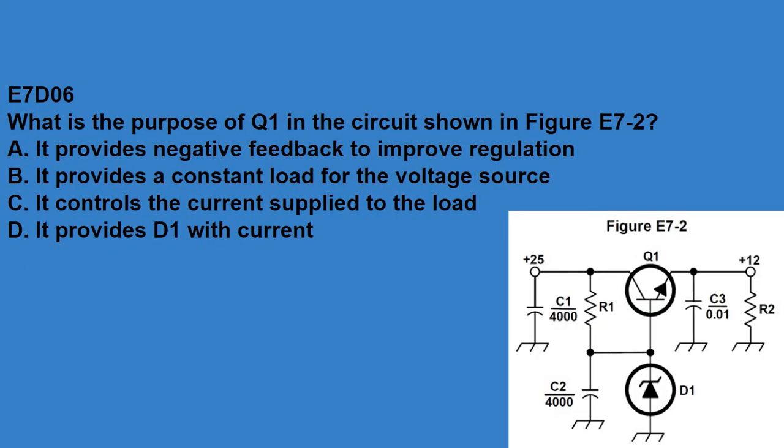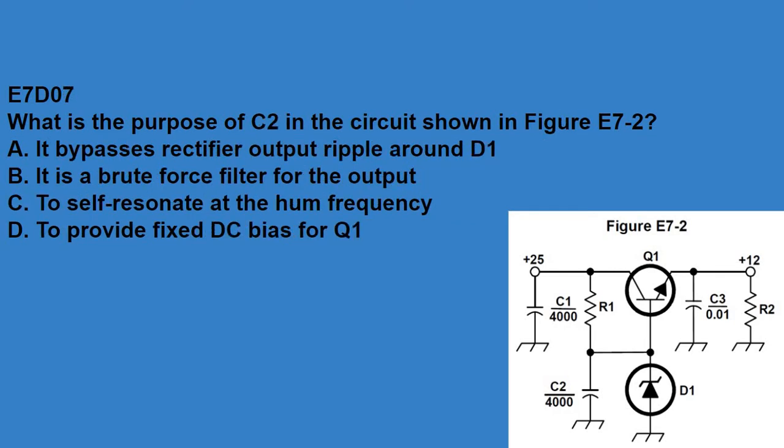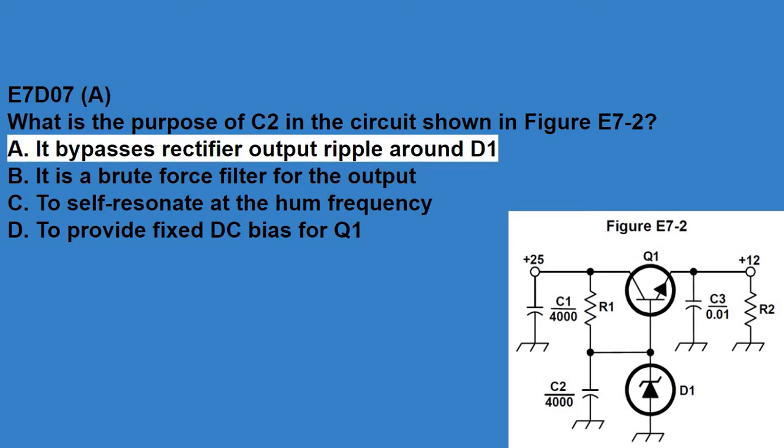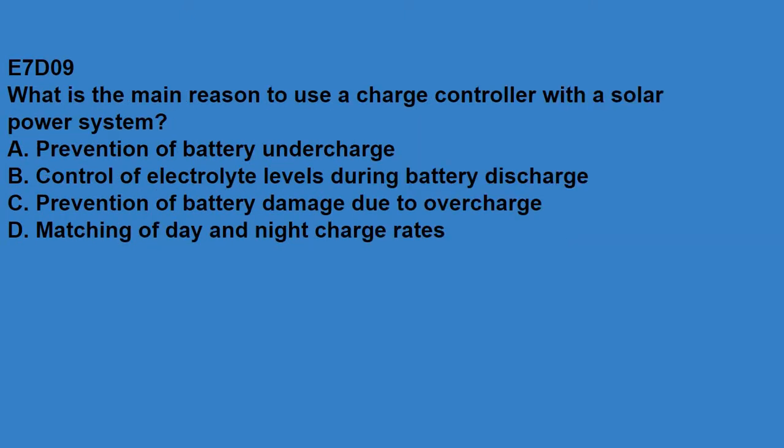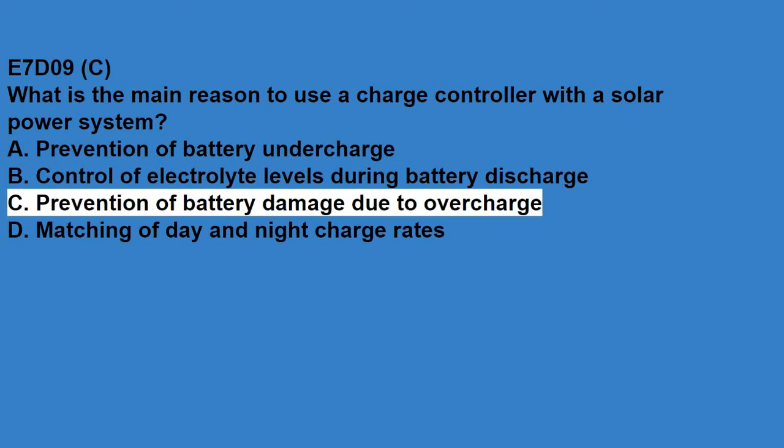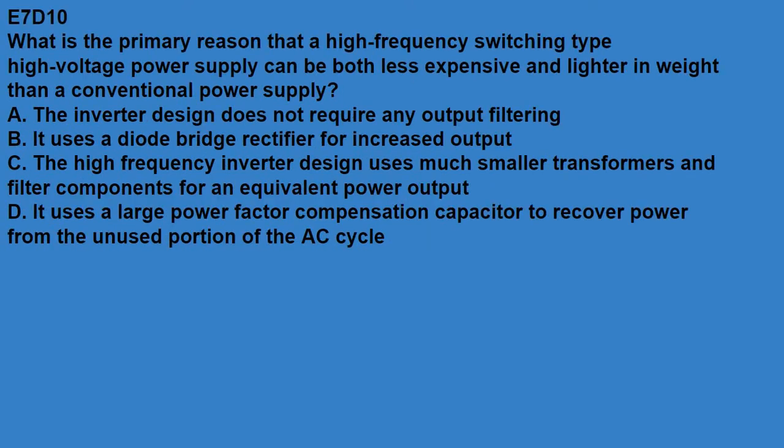E7D06, what is the purpose of Q1 in the circuit shown in figure E7-2? It controls the current supplied to the load. E7D07, what is the purpose of C2 in the circuit shown in figure E7-2? It bypasses rectifier output ripple around D1. E7D08, what type of circuit is shown in figure E7-2? That is a linear voltage regulator. E7D09, what is the main reason to use a charge controller with a solar power system? Prevention of battery damage due to overcharge.